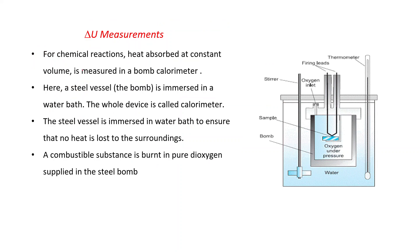First of all, delta U measurements. For chemical reactions, heat absorbed at constant volume is measured in a bomb calorimeter. Here a steel vessel, known as bomb, is immersed in a water bath. The whole device is called calorimeter. You can see this diagram. This is a bomb which is made up of steel.